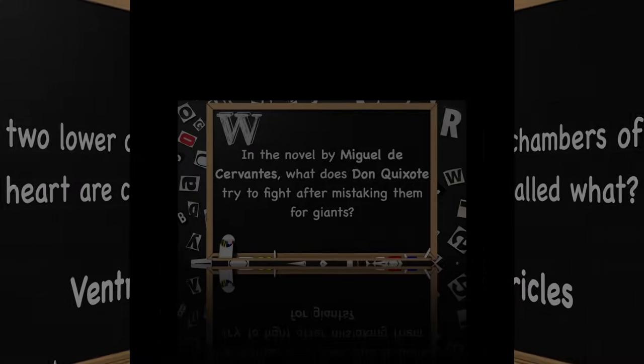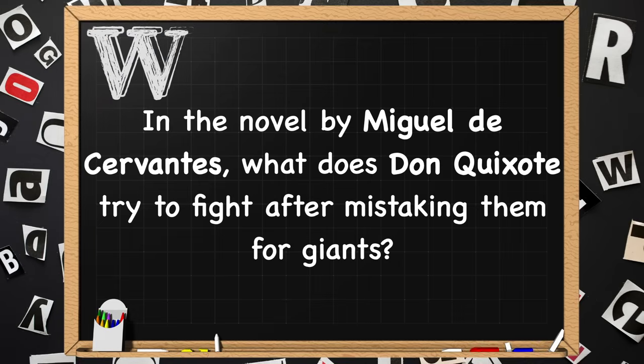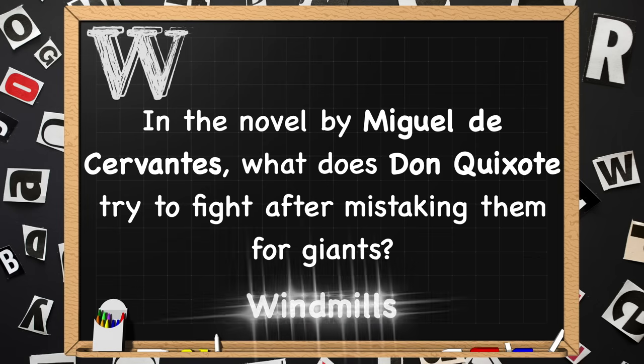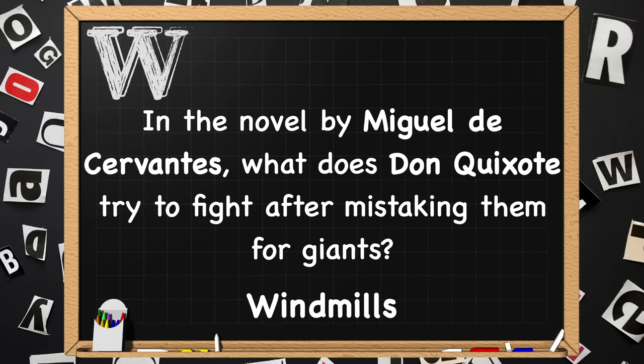Beginning with W. In the novel by Miguel de Cervantes, what does Don Quixote try to fight after mistaking them for giants? He tries to fight windmills.